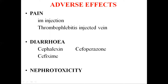Nephrotoxicity: some cephalosporins have low-grade nephrotoxicity which can be precipitated by pre-existing renal disease or concurrent administration of aminoglycosides or loop diuretics. In the presence of renal insufficiency, ceftriaxone, the third generation cephalosporin excreted in bile, can be used safely in patients with renal insufficiency.